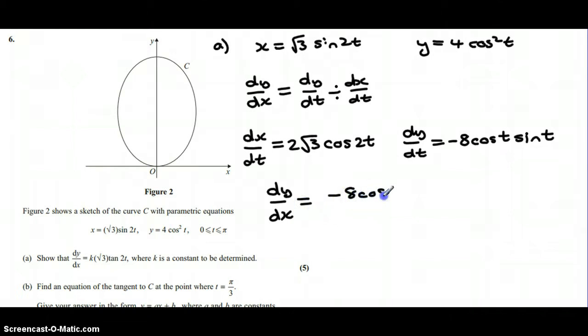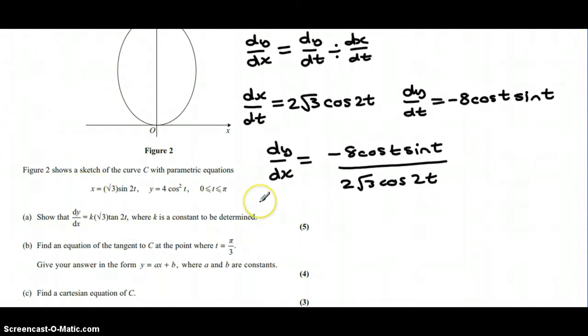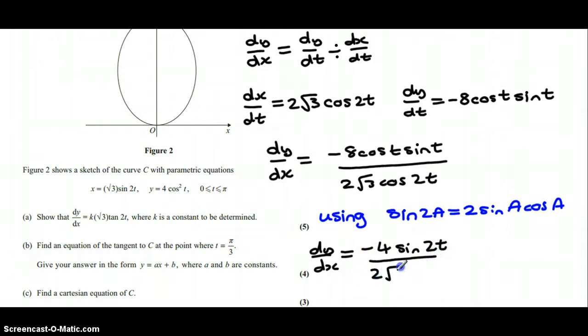In order to get an expression that has a 2t in it, we're going to need to use our trig identities on the numerator. So if we use the trig identity for sine 2a is 2 sine a cos a, we can see that we can change dy by dx into minus 4 sine 2t, that's all over 2 root 3 cos 2t.